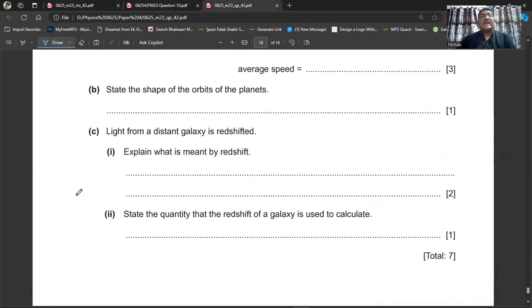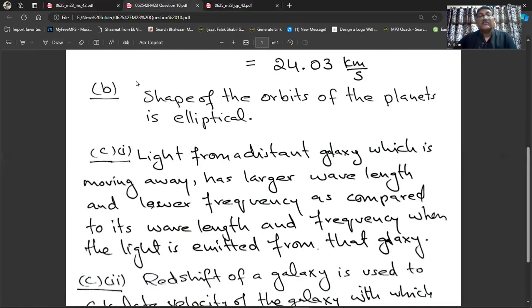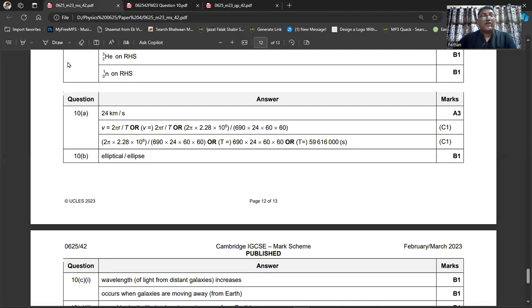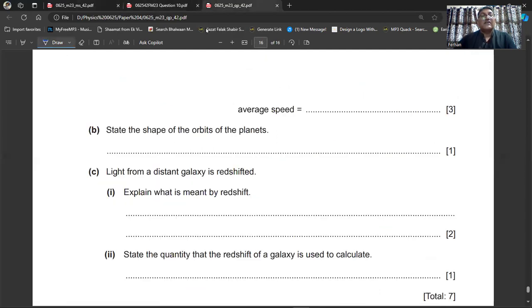Now we are on question number 10, part B. State the shape of the orbits of the planets. Most of the orbits of the planets, they are elliptical. The shape of the orbits of the planets is elliptical. It's a very simple, straightforward statement type question. Elliptical is the simple answer. You can see this is my answer.